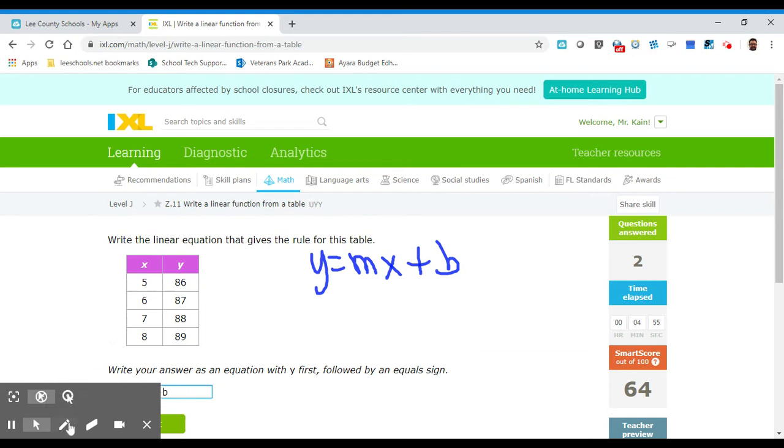So we need the m. We know the m is the slope, so we can subtract our y's and subtract our x's. So let's go 89 minus 88 is 1, and then 8 minus 7 is 1 as well. And 1 over 1 is just 1. So we know our slope is now 1. We can get rid of the m over here and we can just put 1, 1x. If you just said x, you'd be right too.